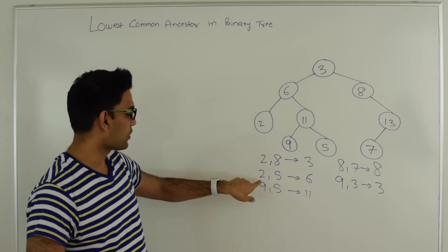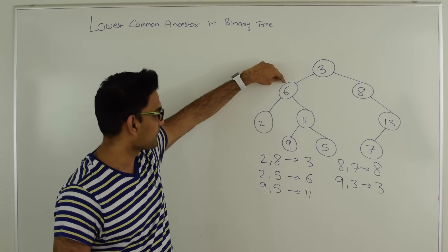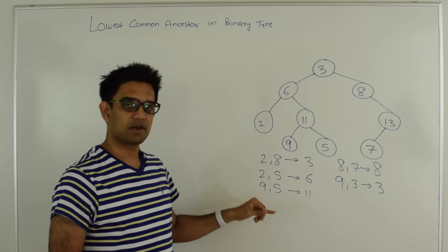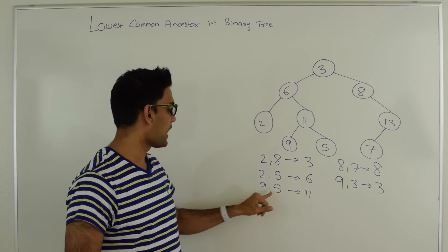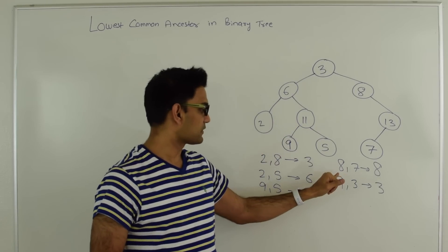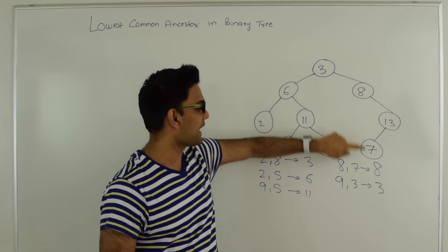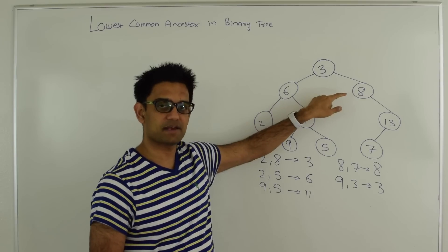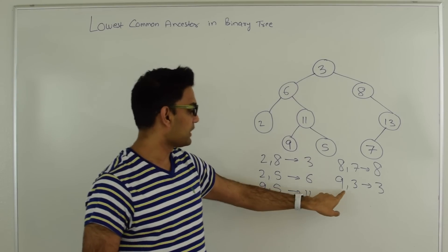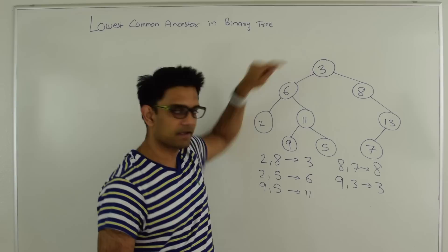Taking another example: the lowest common ancestor of 2 and 5 is 6, because from 6 they diverge in two different directions. Similarly, the lowest common ancestor of 9 and 5 is 11. Also, the lowest common ancestor of 8 and 7 is 8, because 8 is the ancestor of 7. And for 9 and 3, the lowest common ancestor is 3.